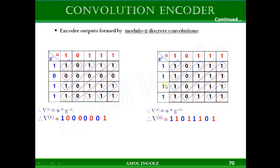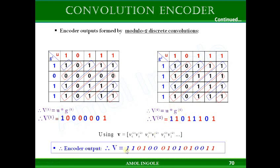Once you have v1 and v2 using this technique, you can write the combined output v of the encoder by taking one bit at a time from v1 and v2 simultaneously to produce the final encoded output.